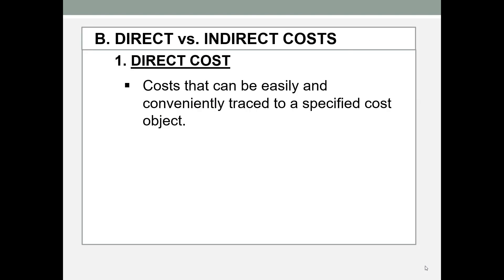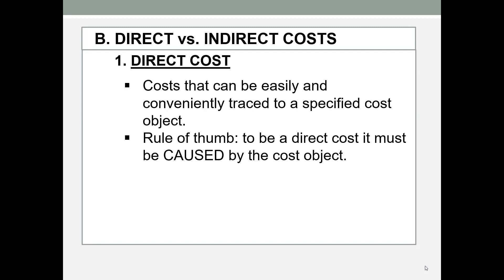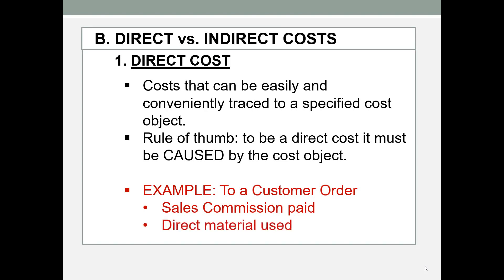A direct cost is one that can be easily and conveniently traced to a specific cost object. What you want to think about is: does this cost object cause this cost to be incurred? For example, with a customer order as the cost object, sales commissions paid and direct material used are direct costs. A company would be able to trace the sales commission paid for a specific customer order fairly easily. If you did not have that customer order, you would not pay that sales commission, and you would not use those materials.